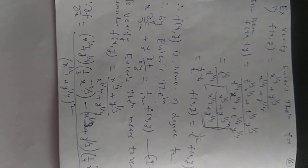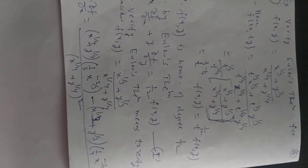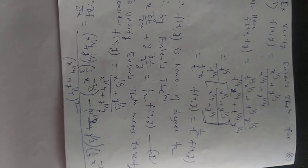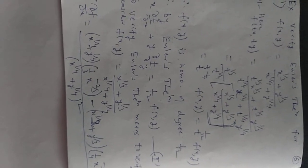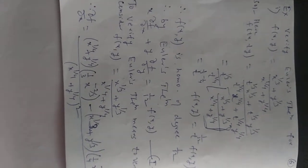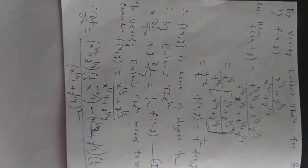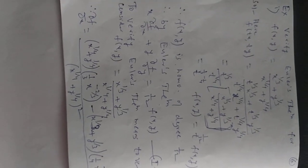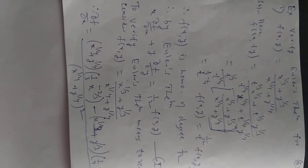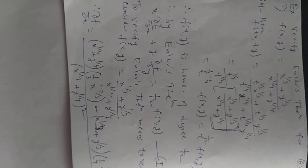Good morning friends. In the last lecture, we were talking about examples on Euler's theorem. There are more than two types of examples. The first type we have completed — that is, using Euler's theorem, find the value of — that part we have completed in the last lecture.